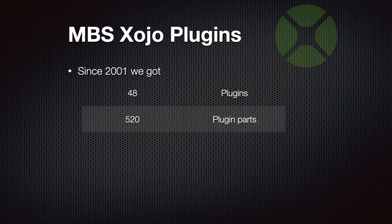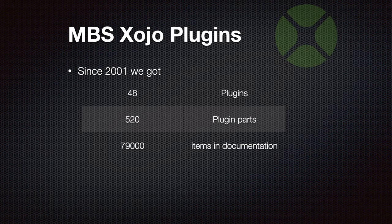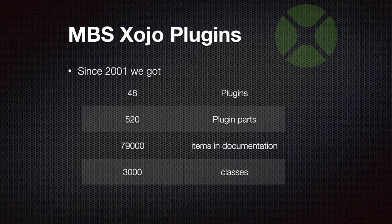We have over 500 plugin parts — the plugins are composed of several little parts, and depending on what you use you only get those parts added to your application. In the documentation we currently have 79,000 items, which include classes, methods, constants, and properties. Currently we have over 3,000 classes available, and the plugin comes with 2,300 example projects.